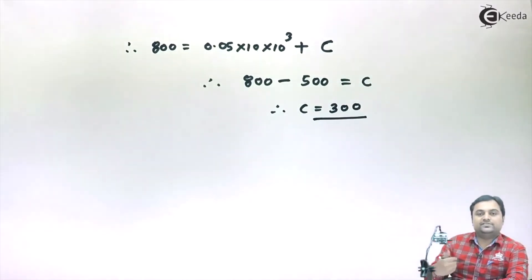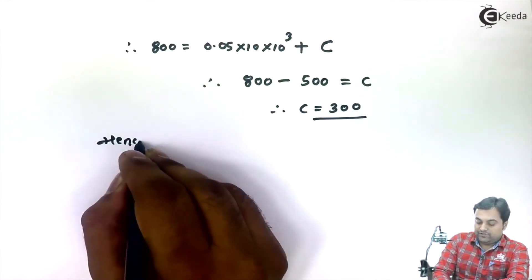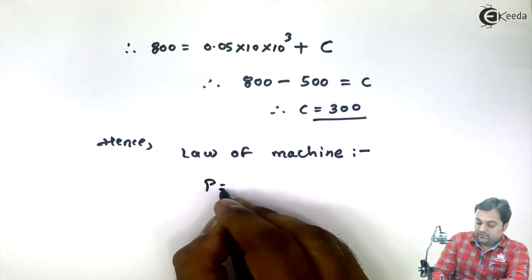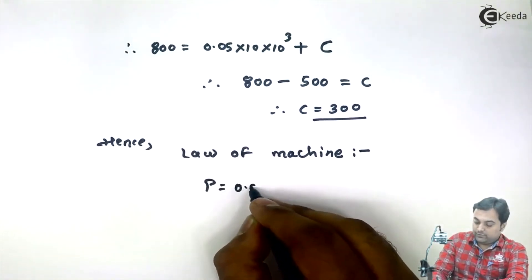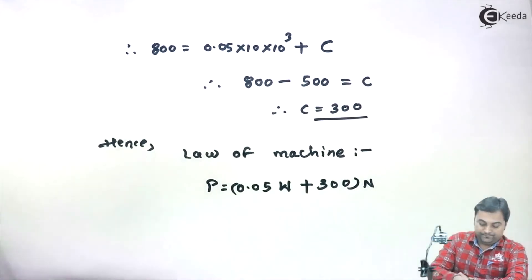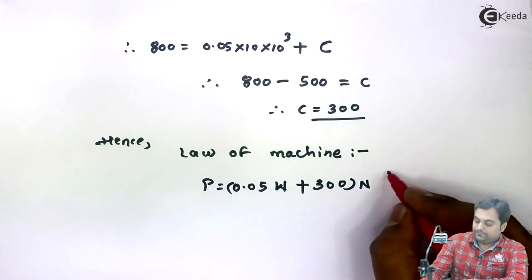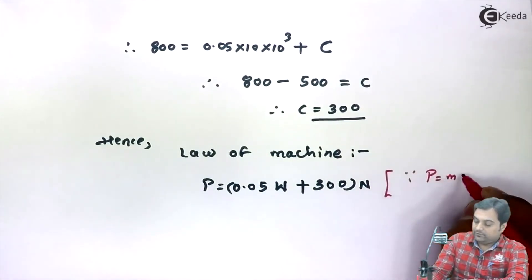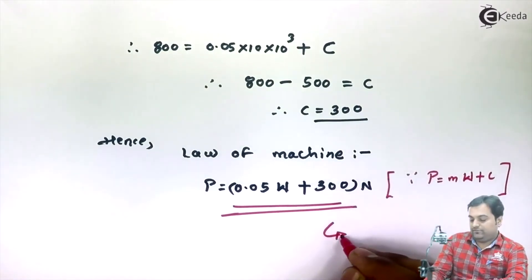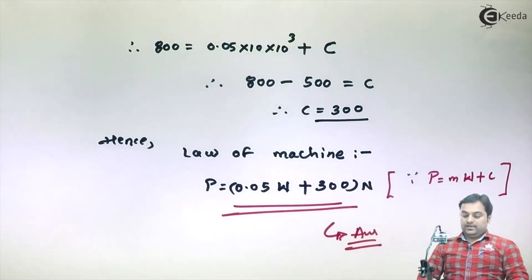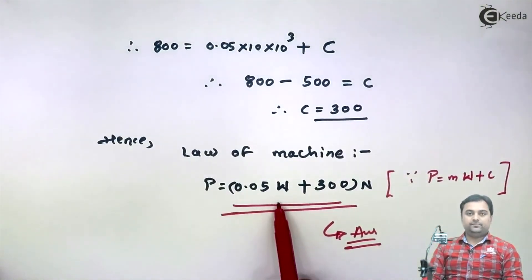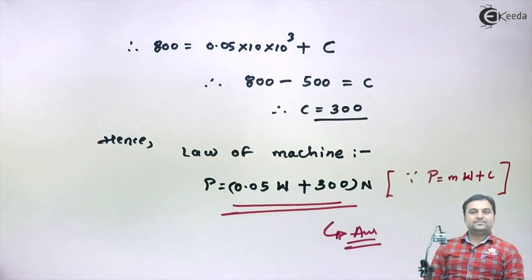After getting M and C values, the law of machine is: P = 0.05W + 300 (in Newton). We have used the formula P = MW + C and found out the law of machine for the given machine. With this law, if the load is given the effort can be calculated, and if the effort is given the load can be found out. With this we complete the problem.